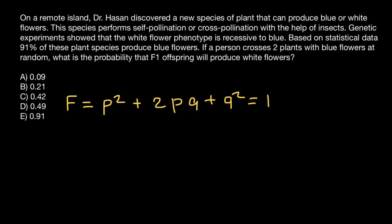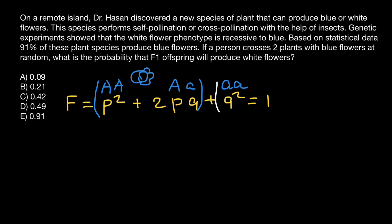p squared stands for the genotype which is capital A, capital A — homozygous dominant. 2pq stands for the heterozygous genotype. And q squared stands for the homozygous recessive genotype. We can get three genotypes with only two alleles: dominant allele A and recessive allele a. These two genotypes — homozygous dominant and heterozygous — make one phenotype: plants with blue flowers. And the homozygous recessive makes the phenotype of plants with white flowers.